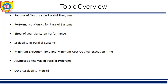Dear students, we are often interested in knowing how fast a problem can be solved, or what the minimum possible execution time of a parallel algorithm is, provided that the number of processing elements is not a constraint. As we increase the number of processing elements for a given problem size, either the parallel runtime continues to decrease and asymptotically approaches a minimum value, or it starts rising after attaining the minimum value.